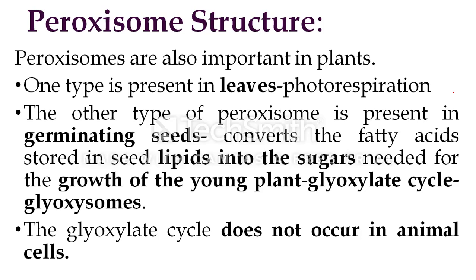The other type of peroxisome is present in germinating seeds. Their function is to convert fatty acids stored in seed lipids into sugars needed for the growth of the young plant. This cycle of processes is called the glyoxylate cycle, and this group of peroxisomes is called glyoxysomes. The glyoxylate cycle does not occur in animal cells — it is present only in germinating seeds to provide nutrition for the germinating embryo.